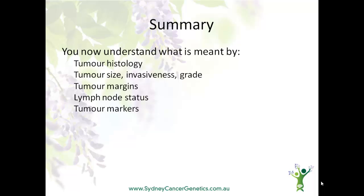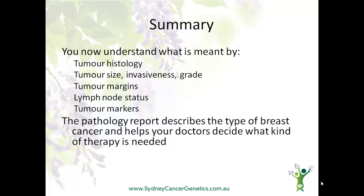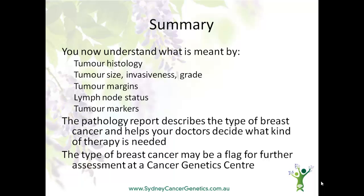So, you now have a good understanding of the terms used on a breast cancer pathology report, and you also understand how the report describes not just the type of cancer, but helps your doctor to decide on what kind of therapy is needed. You also understand that the type of breast cancer, such as a triple negative breast cancer, may actually be a flag — along with the age that the cancer occurred and any relevant family history — that a referral should be made to a genetic oncologist or a family cancer clinic.